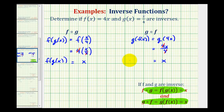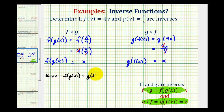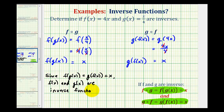So this is the required work that we have to show in order to determine if two functions are inverses of one another. Since f of g of x equals g of f of x, and both equal x, then f of x and g of x are inverse functions. Note that if either of these composite functions were not equal to x, that would be enough information to show that the two functions were not inverses.